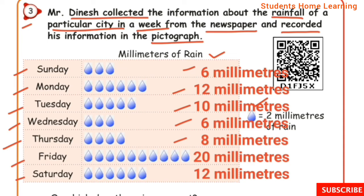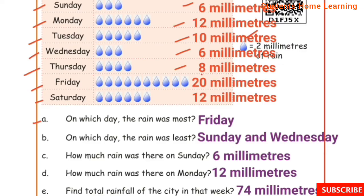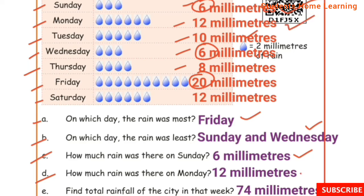Questions on the pictograph: 1. On which day was the rain most? Answer: Friday, 20 mm. 2. On which day was the rain least? Answer: Sunday and Wednesday, 6 mm each. 3. How much rain was there on Sunday? Answer: 6 mm. 4. How much rain was there on Monday? Answer: 12 mm. 5. Find the total rainfall of the city in that week. Adding all values, answer: 74 mm.